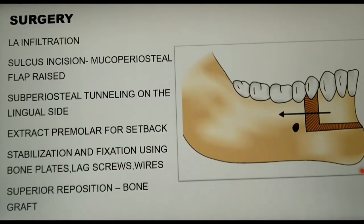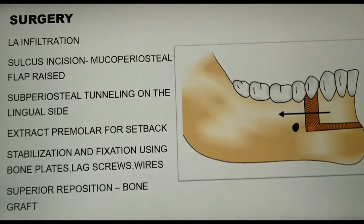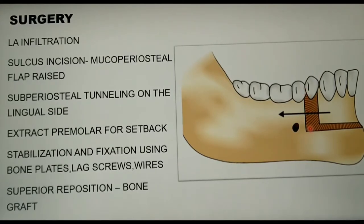Next, a subperiosteal tunneling is done on the lingual side in order to facilitate free movement of the dentoalveolar segment once it is sectioned. In the case of dentoalveolar segment setback, extraction of the first premolar is done on either side.